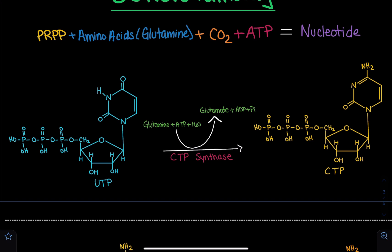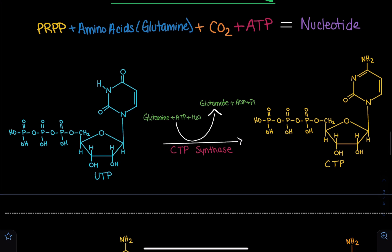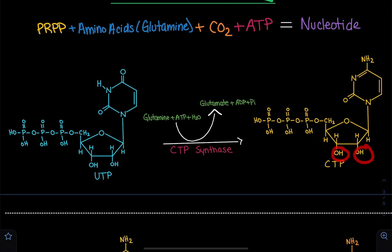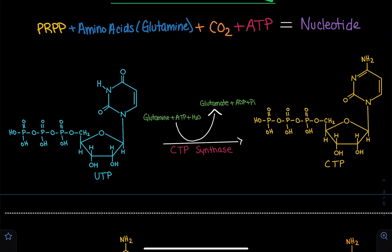This cytosine triphosphate can be used in building RNA. But when we talk about CTP and DNA, remember that it has to be DCTP — it has to be deoxyribose. This sugar here is a ribose, because we have a hydroxyl group on the C2. Whenever we have a hydroxyl group on the C2, it is a ribose, but in a deoxyribose, we have a hydrogen on the C2 instead of that hydroxyl group.